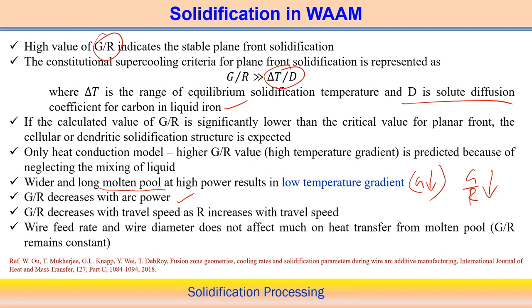G/R also decreases with travel speed, because R increases with travel speed — R is always in compliance with travel speed. At very high welding/arc speed, R value is higher, meaning G/R is actually lower. So in both cases — either increasing power or increasing scanning speed — G/R value reduces. When G/R reduces, the structure transitions to cellular, columnar, or equiaxed structure.